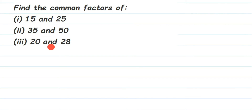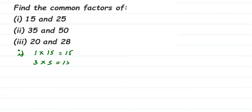Let's start with the first question — 15 and 25. Let me write down the factors of 15. I know that 1 × 15 = 15, so every number is divisible by 1. Then it doesn't go in the 2 table. It does go in the 3 table, so 3 × 5 = 15. Then it doesn't go in the 4 table. It goes in the 5 table, but I've already written 3 × 5 = 15.